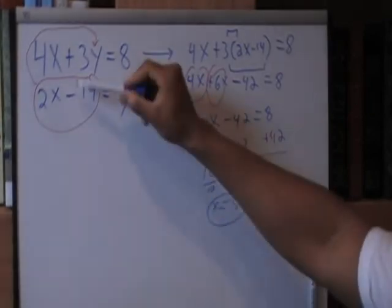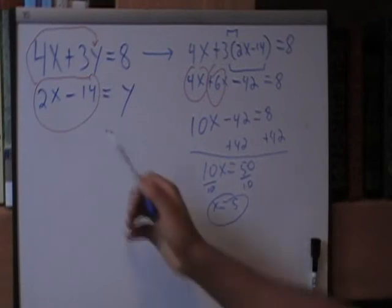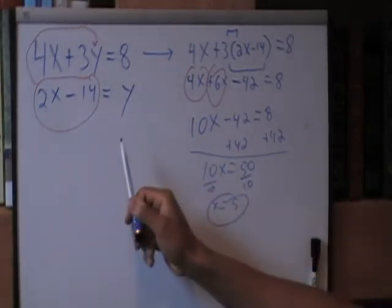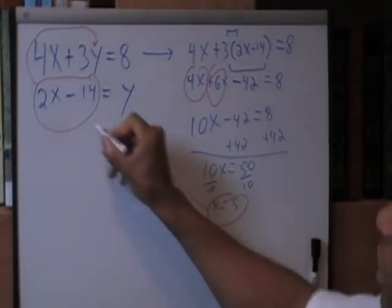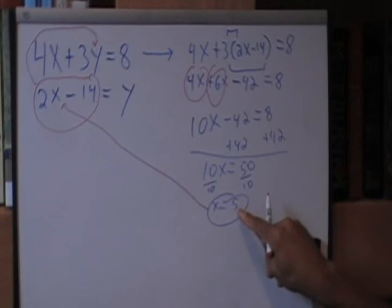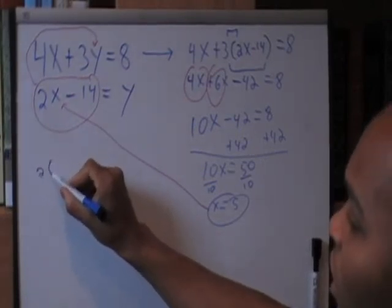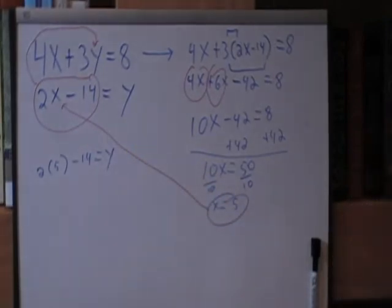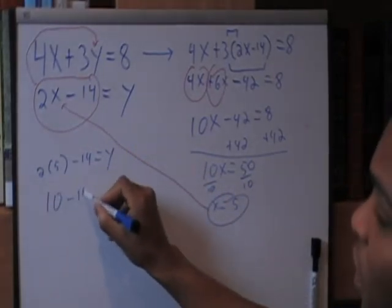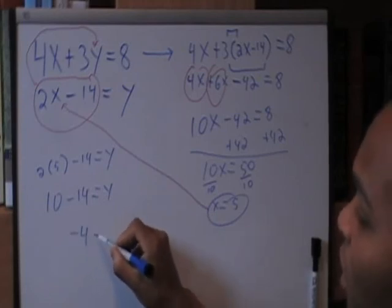So, you can replace x in the original two equations with 5 and solve for y. I would recommend using the second equation since this is already solved for y. So, I would replace the x with what we found x to equal. Since x equals 5, we can rewrite this equation as 2 times 5 minus 14 equals y. 2 times 5 is 10 minus 14 equals y. And you can see negative 4 equals y.